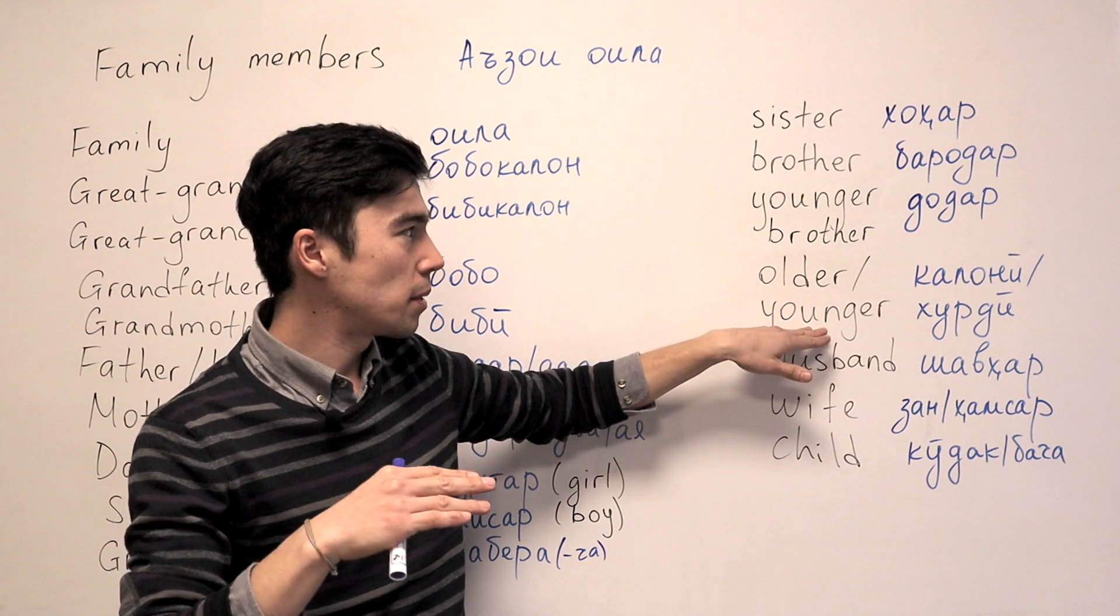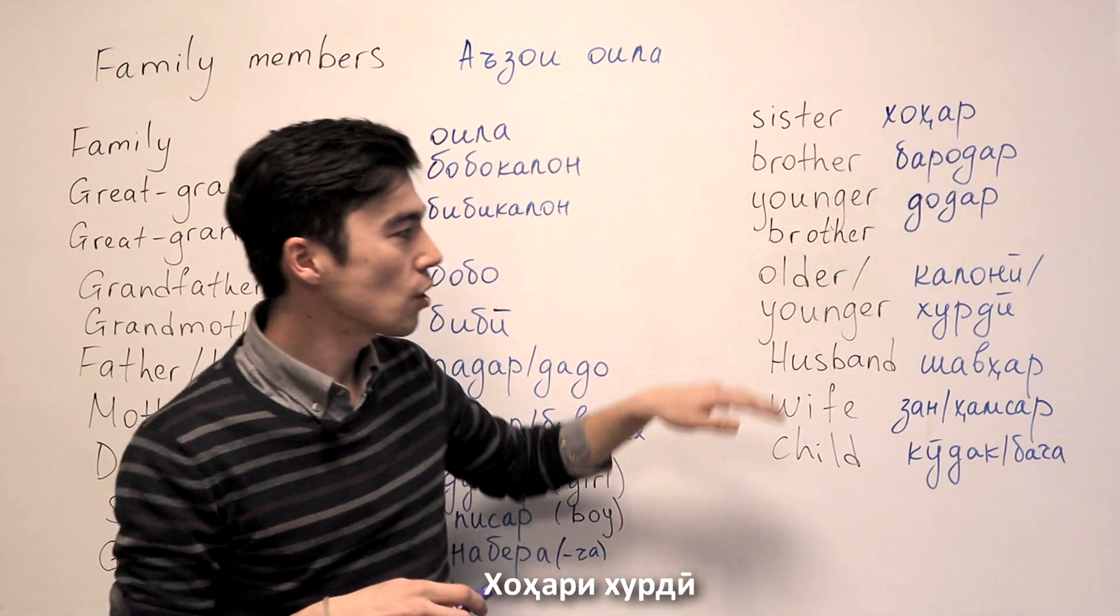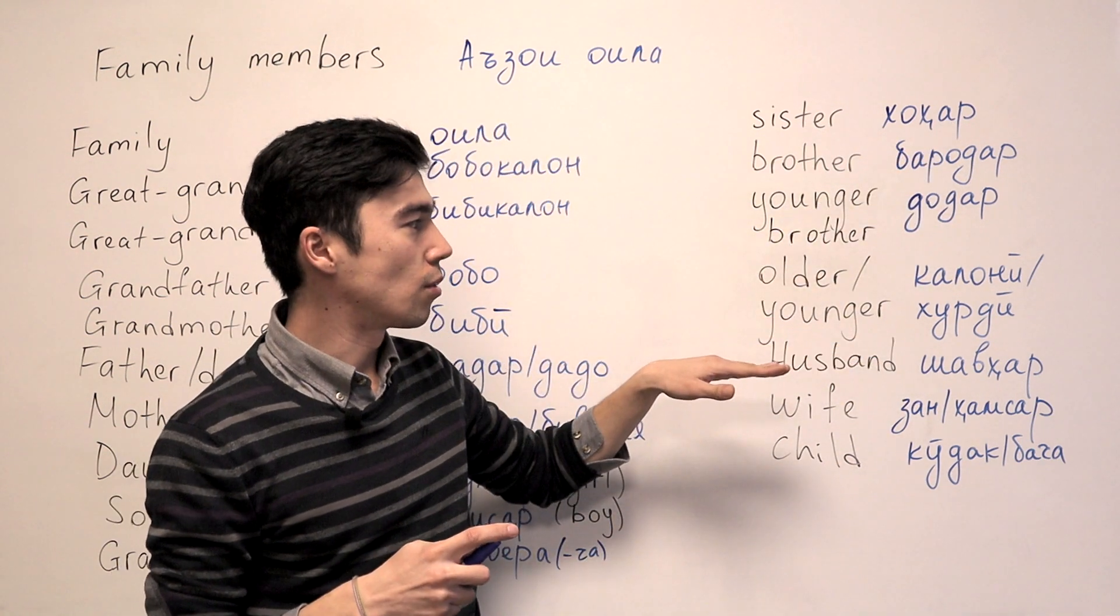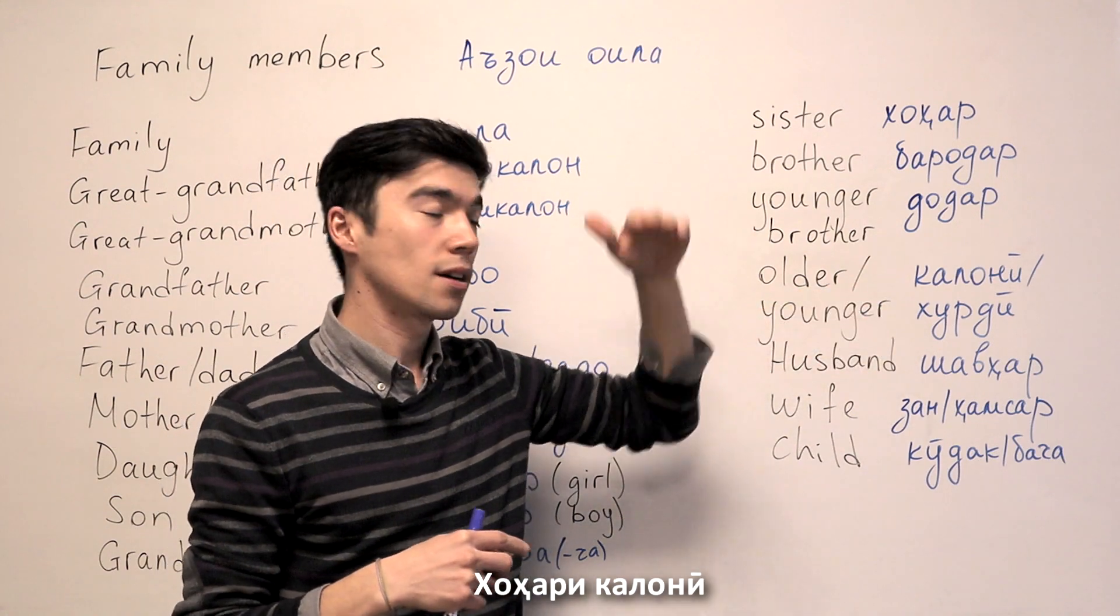Younger sister would be Khohari Khurdi. At the end, we have I. Khohari Khurdi. Or if she's older, we say Khohari Kaloni.